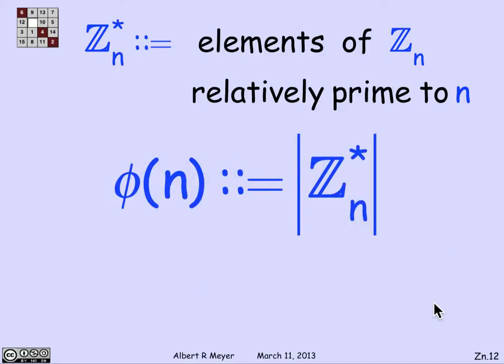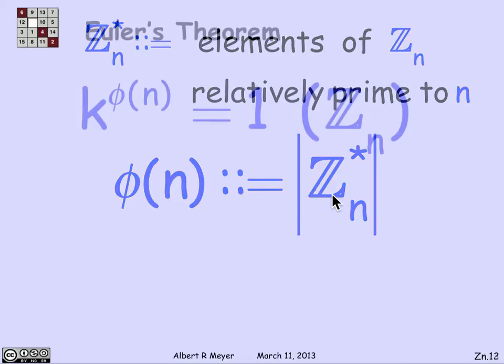What else do we know about Z_n star? Well, the definition of phi(n) was the number of integers in the interval from 0 to n that are relatively prime to n. Of course, that's exactly the size of Z_n star. So phi(n) is simply the size of that collection of elements. Not surprising they were defined that way.